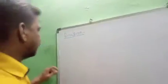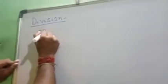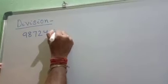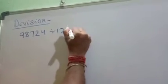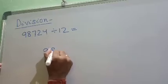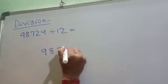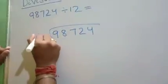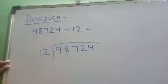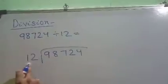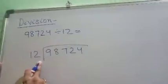So let's take an example: 98,724 divided by 12. Let's check whether these two numbers are divisible with each other or not. 98,724 is our dividend and 12 is our divisor.